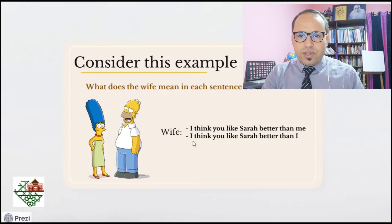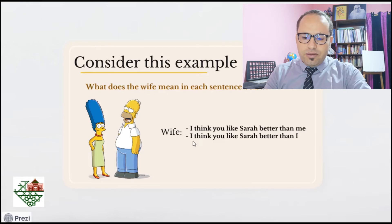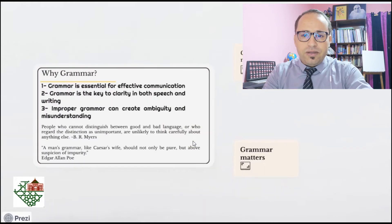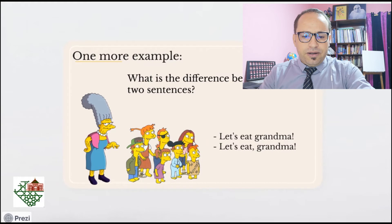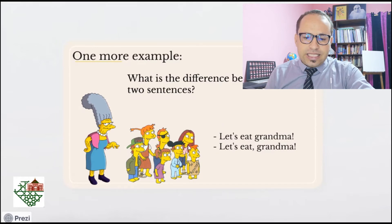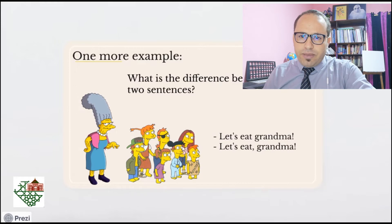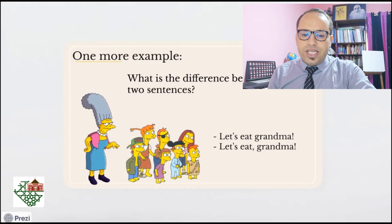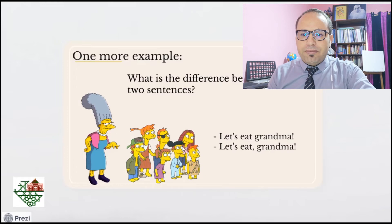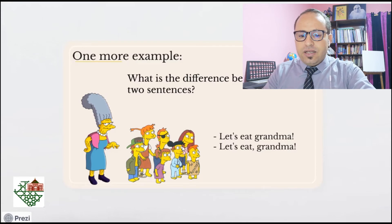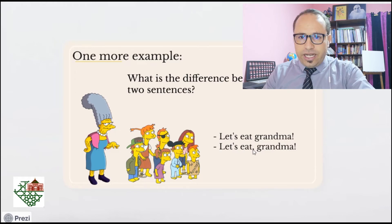I want you to consider another example, and this time it is related to punctuation — and as you know, punctuation is part of grammar. Look at the pictures here. We have kids and their grandma, and we have two sentences. The first one reads 'Let's eat grandma,' and the second reads 'Let's eat, grandma.' To some people, these two sentences look exactly alike — they contain the same number of words — except for this little comma, which doesn't seem to make any difference. But the difference is huge in meaning.